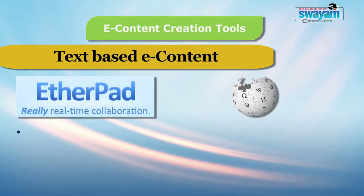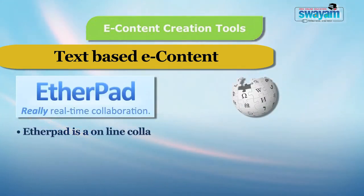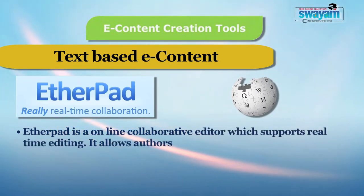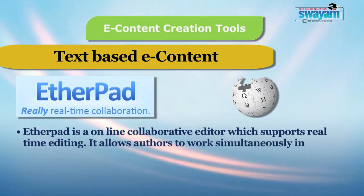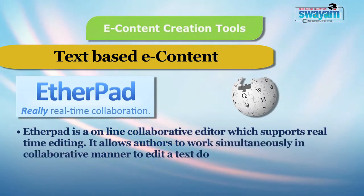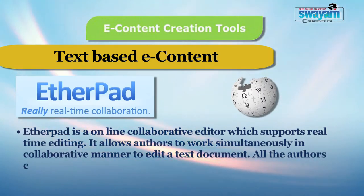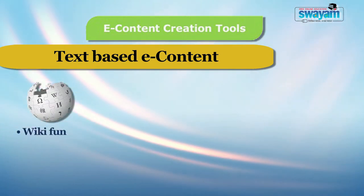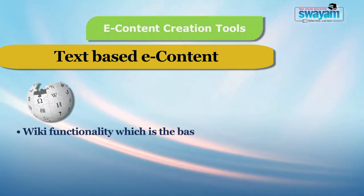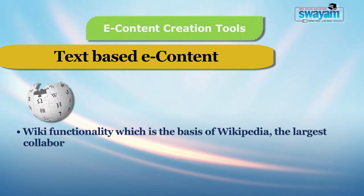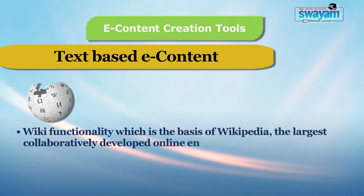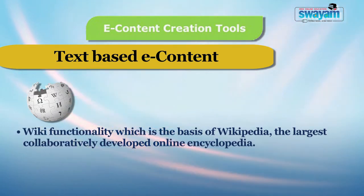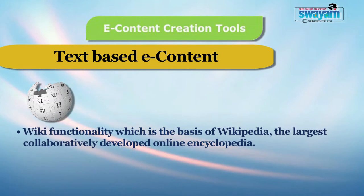Etherpad is an online collaborative editor which supports real-time editing. It allows authors to work simultaneously in a collaborative manner to edit a text document. All the authors can see each other's edits in real-time. Similarly, wiki functionality is the basis of Wikipedia, the largest online encyclopedia, developed by people like you and me, which we all visit for quenching our thirst for knowledge.